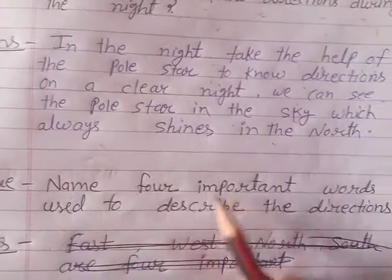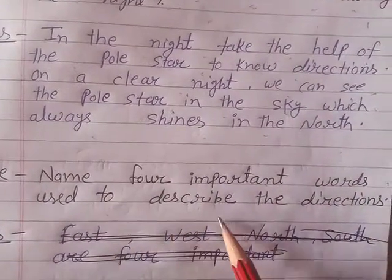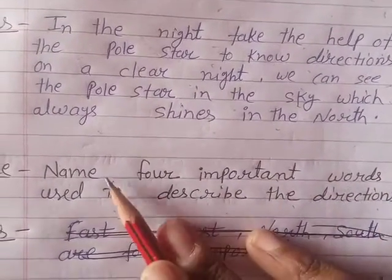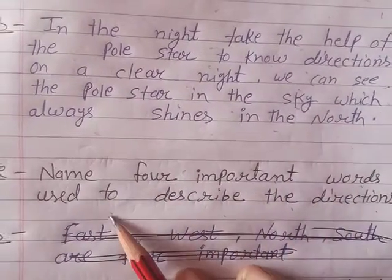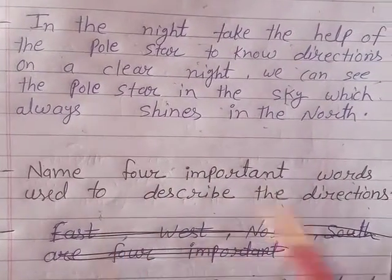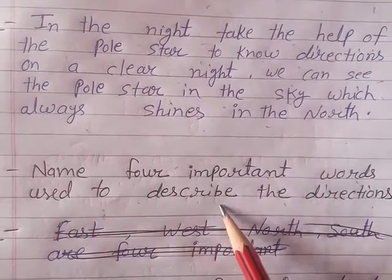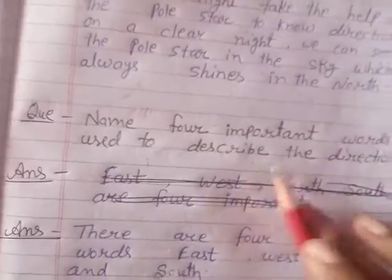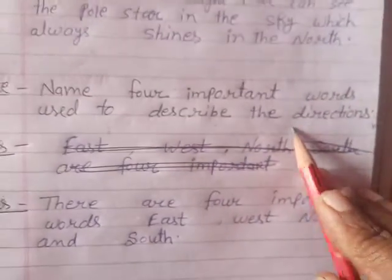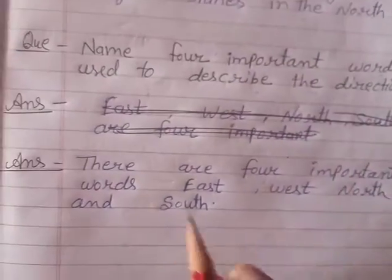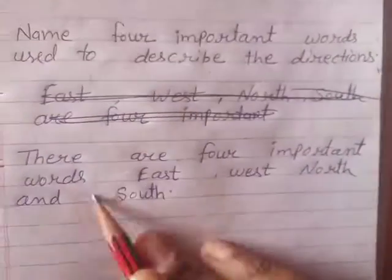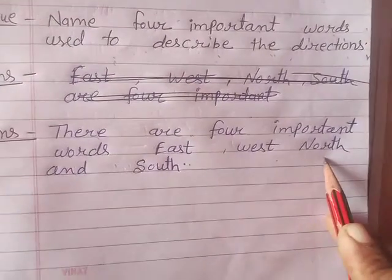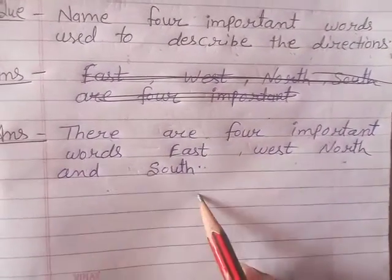Last question: Name four important words used to describe the direction. There are four main important words: east, west, north and south.